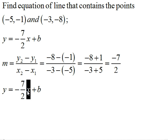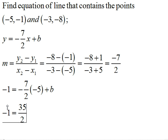So that means that my x here is going to be -5, and my y here is going to be -1. And then I simplify to solve for b. So when I multiply -7/2 times -5, I'm going to have -1 = 35/2 + b.